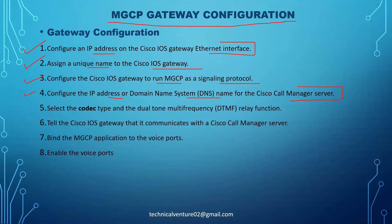Step four would be to configure the IP address or the DNS for the CUCM server. If you have the CUCM server IP address, you can just use the command 'ccm-manager config server' and then the IP address. Or you can use the DNS server as well if you have the FQDN — fully qualified domain name. Then you need to mention the codec type, whether you're using all codecs or different types, and the DTMF function — whether you are using out-of-band, in-band like RTP, or KPML.